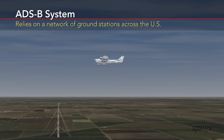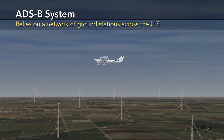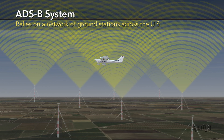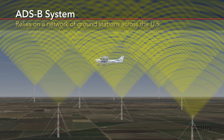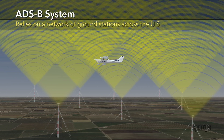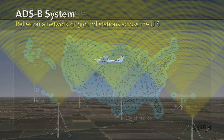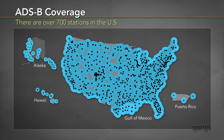While ADS-B doesn't need radar sites, it does depend on a network of small antennas to receive aircraft reports and send them back to ATC. These ground stations also transmit weather and traffic information back up to properly equipped aircraft. The ADS-B network consists of over 700 stations, providing excellent coverage above 3,000 feet AGL to most of the U.S.